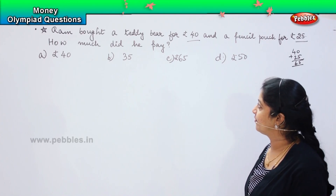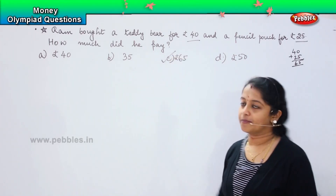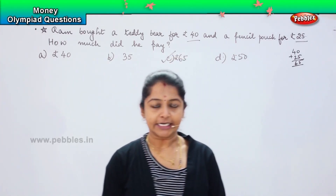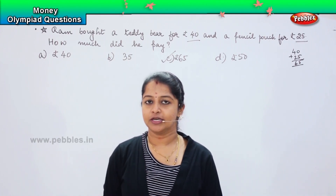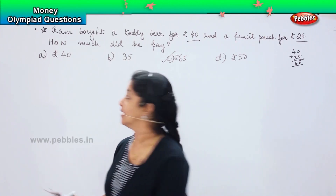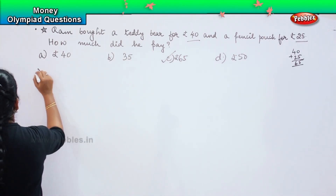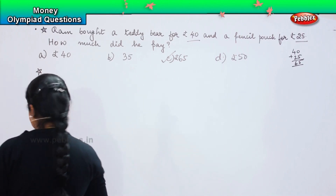Where can you see 65? Yes, it is Option C. Clear? Shall we proceed further? So this is the next question.